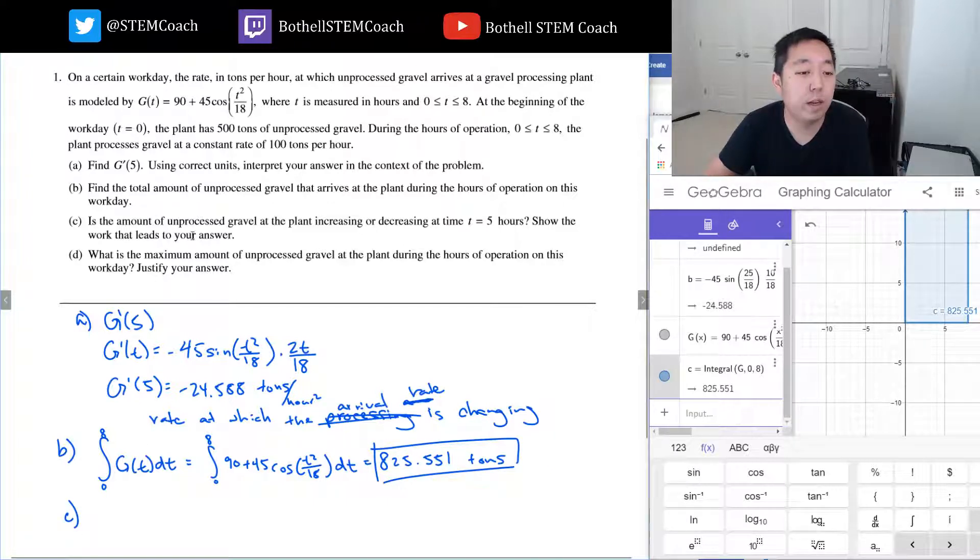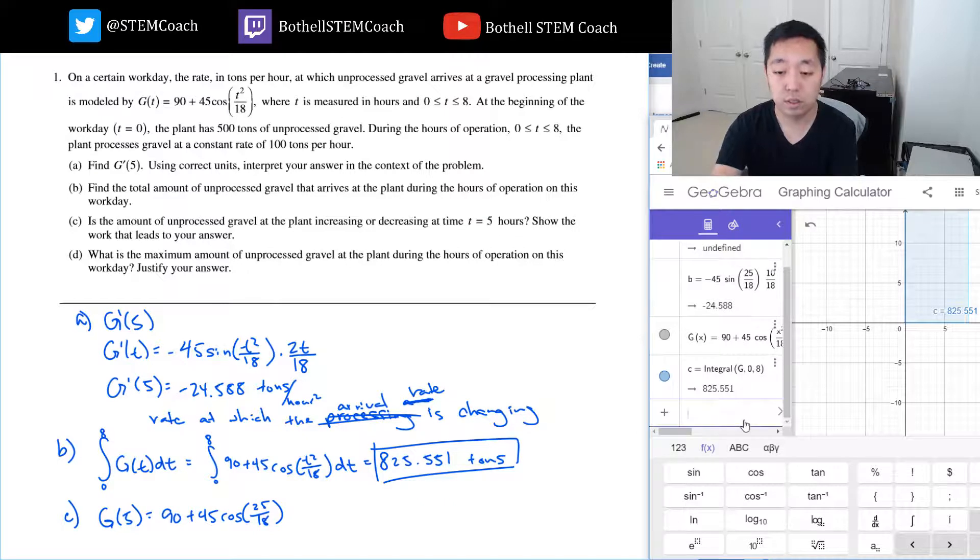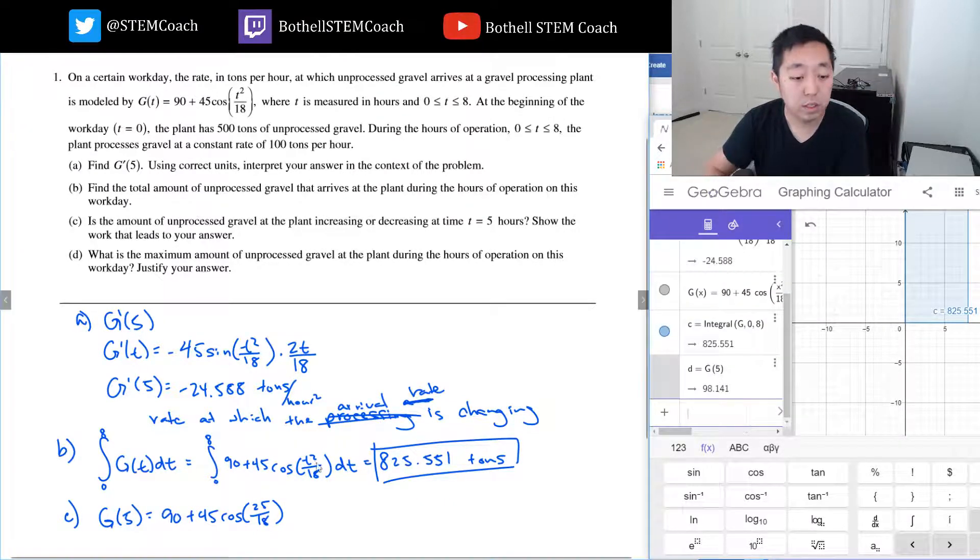Part C: Is the amount of unprocessed gravel at the plant increasing or decreasing at time t equals five hours? Show the work that leads to your answer. So g(5) would be the amount that's arriving. So g(5) is 90 plus 45 cosine 25 over 18. So I could do capital G of 5, and that's equal to 98.141 tons per hour.